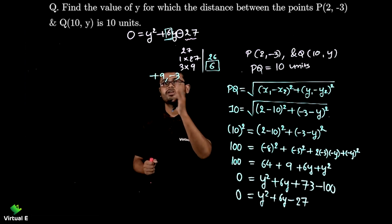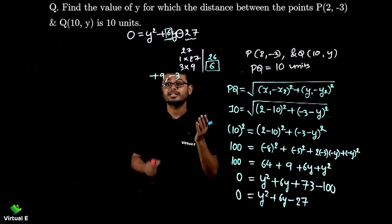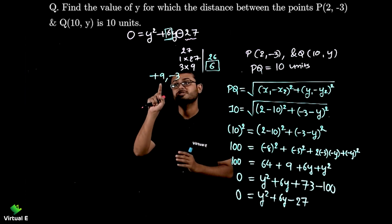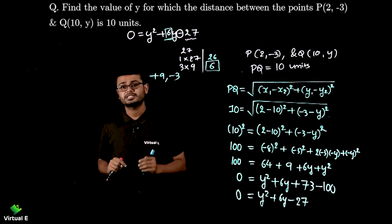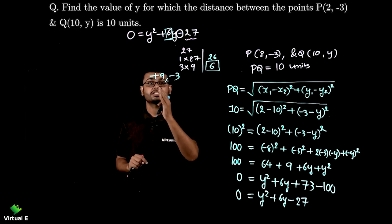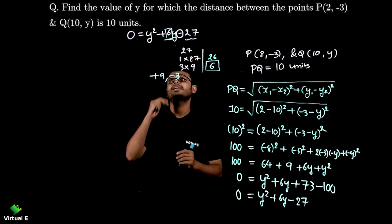Let's add them. Plus 9 minus 3. We are going to subtract. 9 - 3 is 6. Bigger number sign which is positive. So it is plus 6. What are my factors? Plus 9 and minus 3. Now let's write the factors.